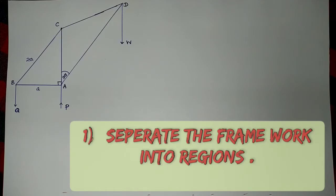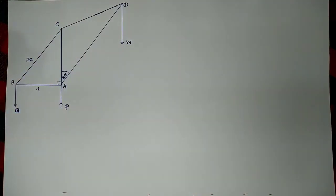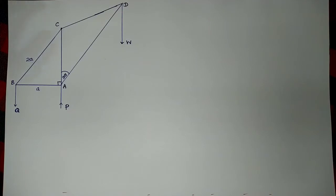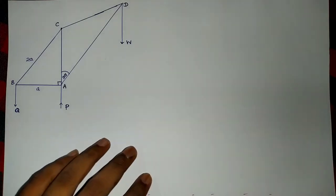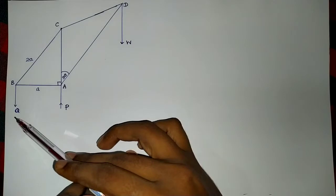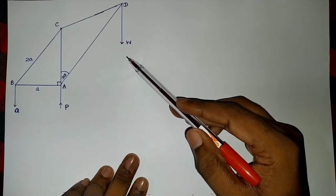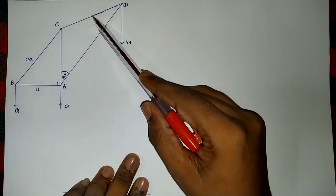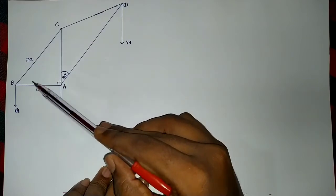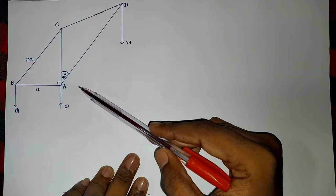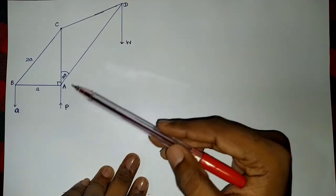I am going to separate this given frame into its regions. First you have to extend the given forces of the diagram. In this diagram there are three forces: two unknown forces P, Q and a weight W. There are also unknown forces in each and every rod. These are called stressors, which means they can be either tensions or thrusts.